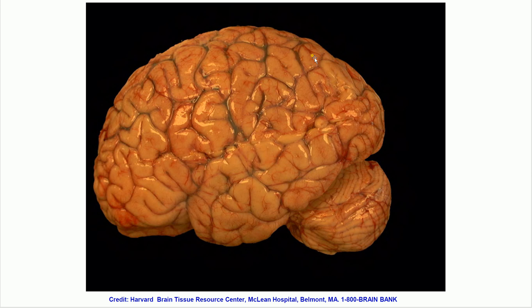The brain is normally covered by three different layers. The outer layer, which is the dura — a very thick, dense, fibrous layer — has been removed in this image. The inner layers are the arachnoid and the pia. Together they're called the leptomeninges, and they form this very thin, very delicate covering immediately adjacent to the brain. Think about it like wrapping your brain in shrink wrap — a very thin surface layer just going along the surface of the brain.